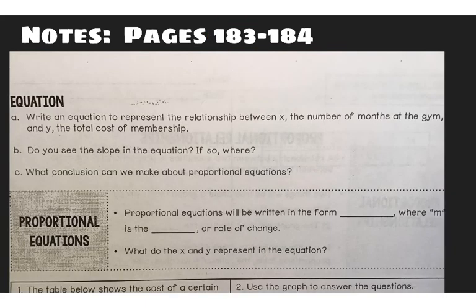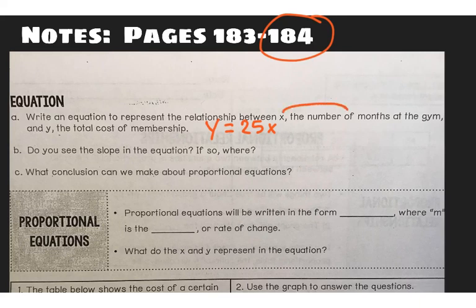Okay the next page, this is page 184, is actually still talking about the same problem. And now it wants us to write an equation to represent the relationship between x, the number of months at the gym, and y, the total cost of the membership. We know that the total cost, which they said is y, is $25 per month. We wanted x to represent the months, and y, the total cost. So the total cost is $25 per month. That is our equation and we will practice that more.